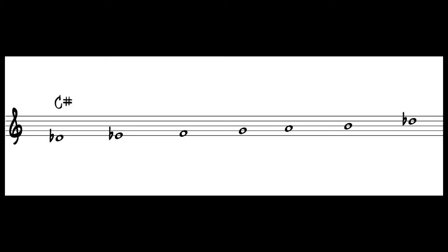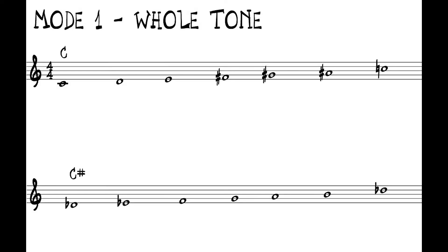Here is the other whole tone scale, starting on D flat or C sharp: D flat, E flat, F, G, A, B, and back to D flat. We could also spell this as C sharp, D sharp, F, G, A, B, and back to C sharp. These are the only two whole tone scales that really exist — one starting on C and one starting on C sharp or D flat.